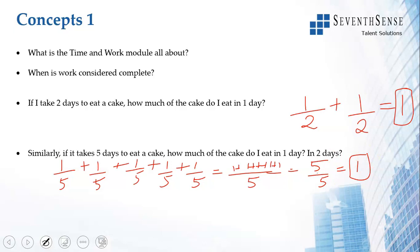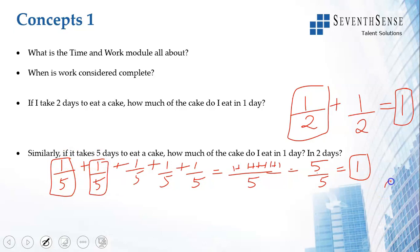So in one day I am eating 1/5. If I take two days to eat a cake, in one day I am eating 1/2. If I am taking five days to eat a cake, in one day I am eating 1/5. In two days: 1/5 plus 1/5 gives me 2/5. So in two days it is 2/5 of the cake.